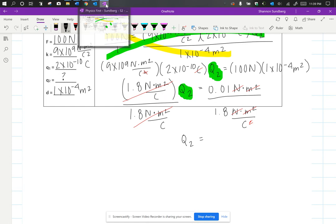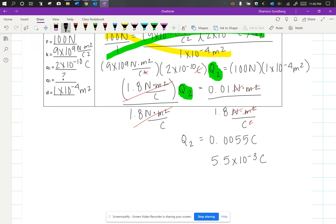Equals. And when I take 0.01 and I divide by 1.8 in my calculator, I'm going to get 0.0055 coulombs. And your calculator might give you that number in scientific notation.